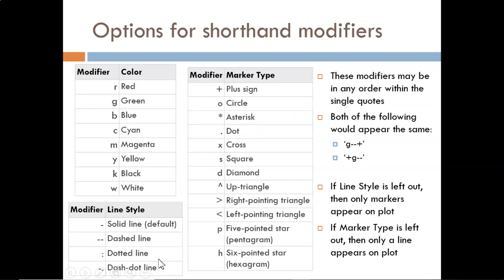There are a variety of options for these shorthand modifiers. They come in three categories: color, line style, and marker type. So you can choose from any of these eight colors, these four line styles, and these twelve markers. Choose one from each category.